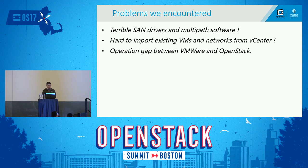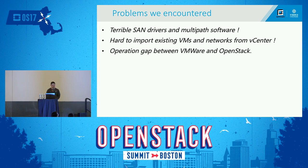Since things are not that easy, we have encountered three major problems. The first is terrible SAN drivers and multi-path software. The second is how to import existing virtual machines and networks from vCenter. And the third is the operation gap between VMware and OpenStack.